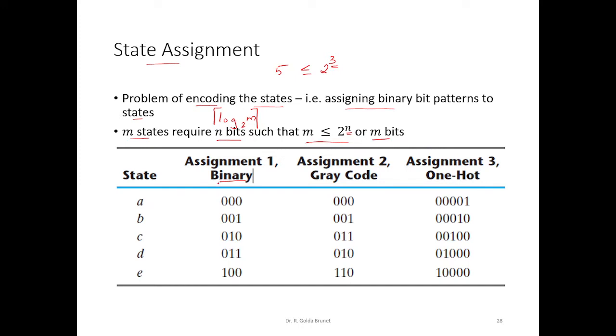So, when we assume binary bit pattern, we will say A is represented by 000, B is represented by 001 and so on till 100.